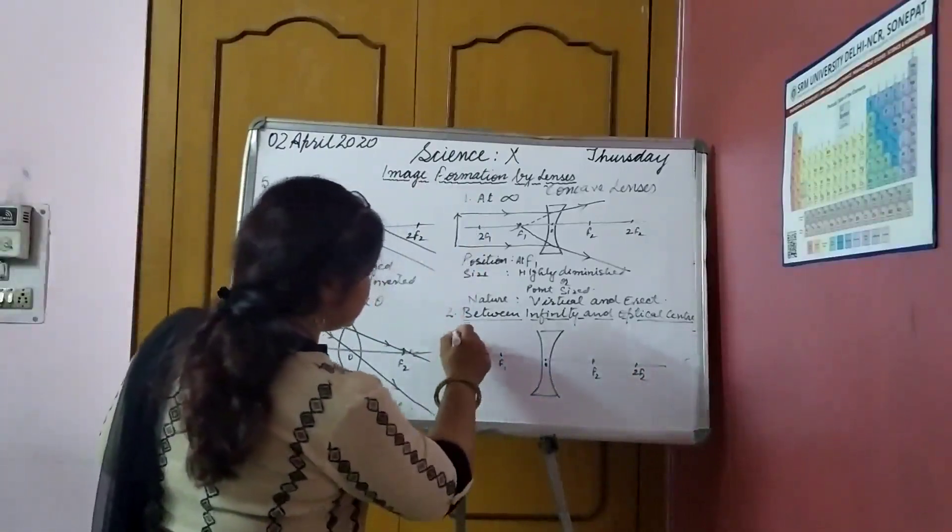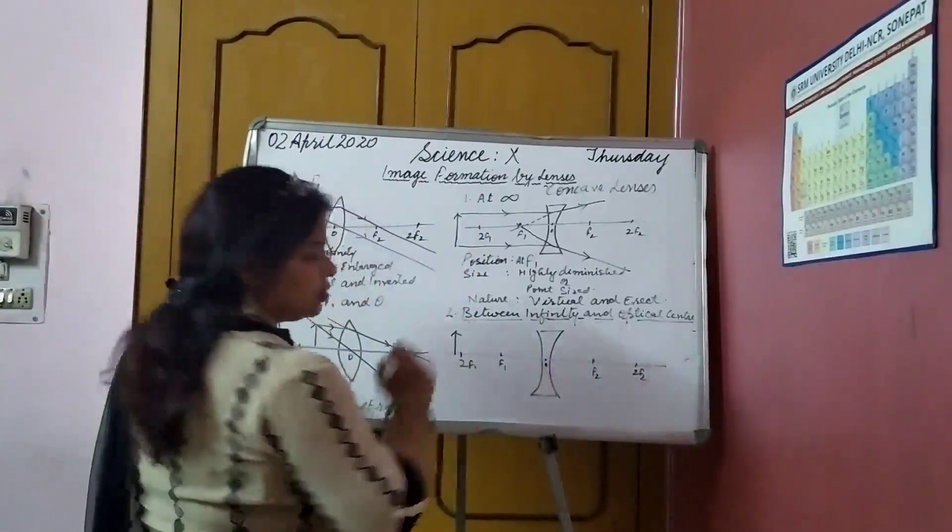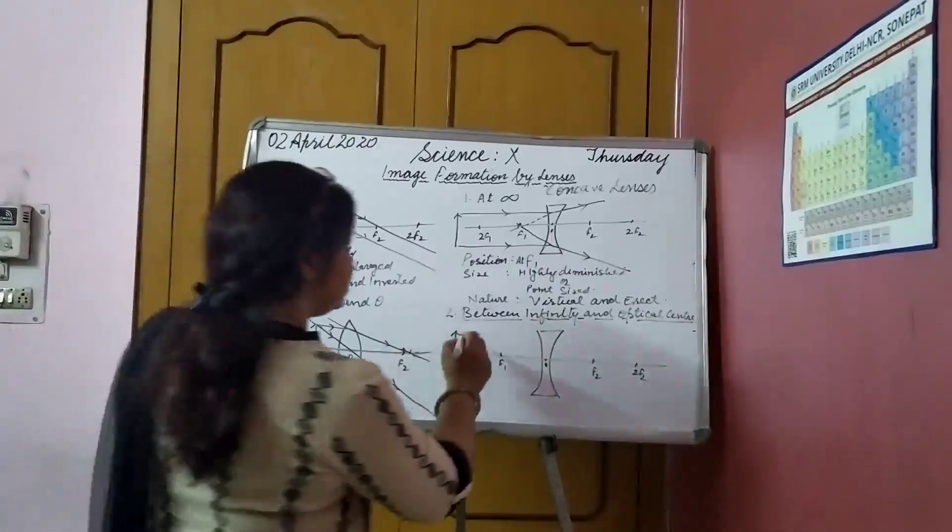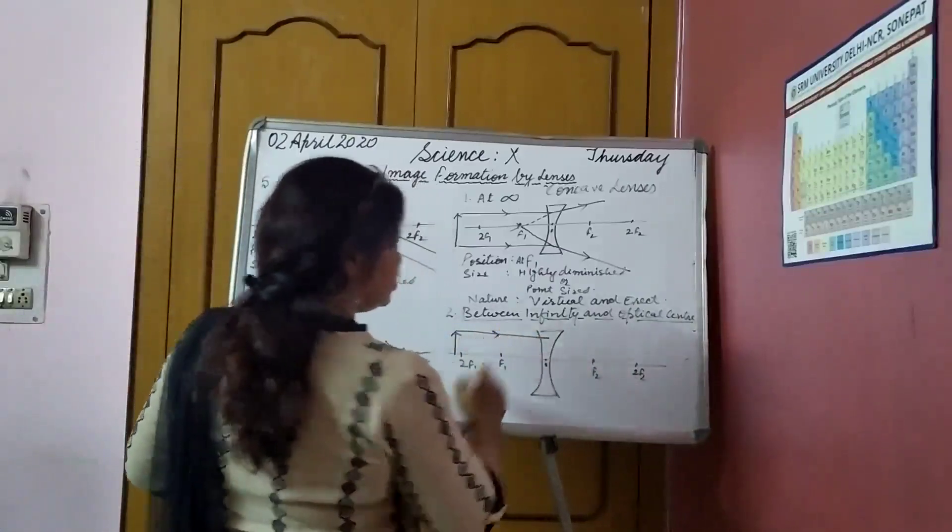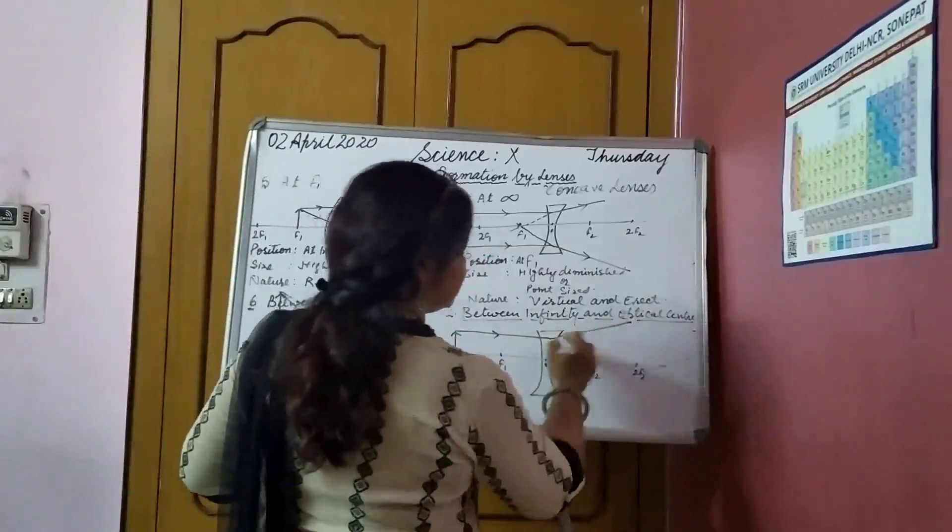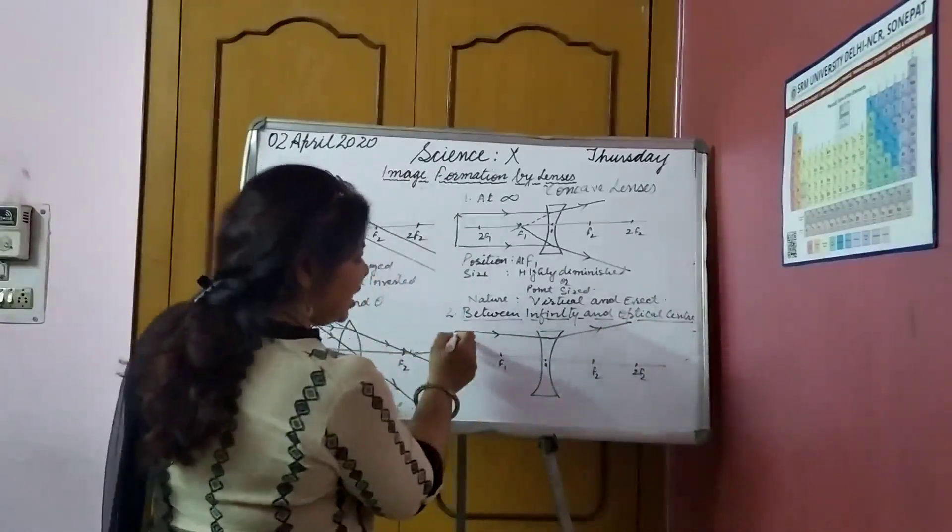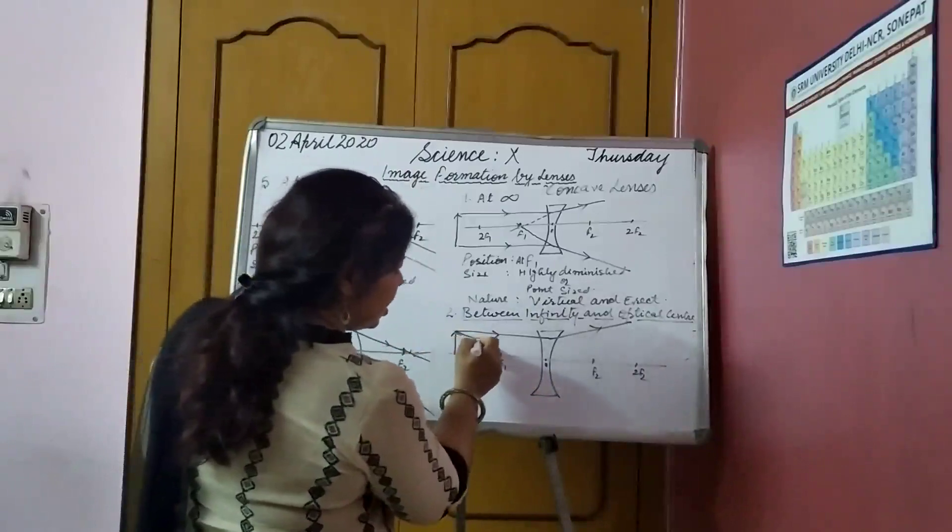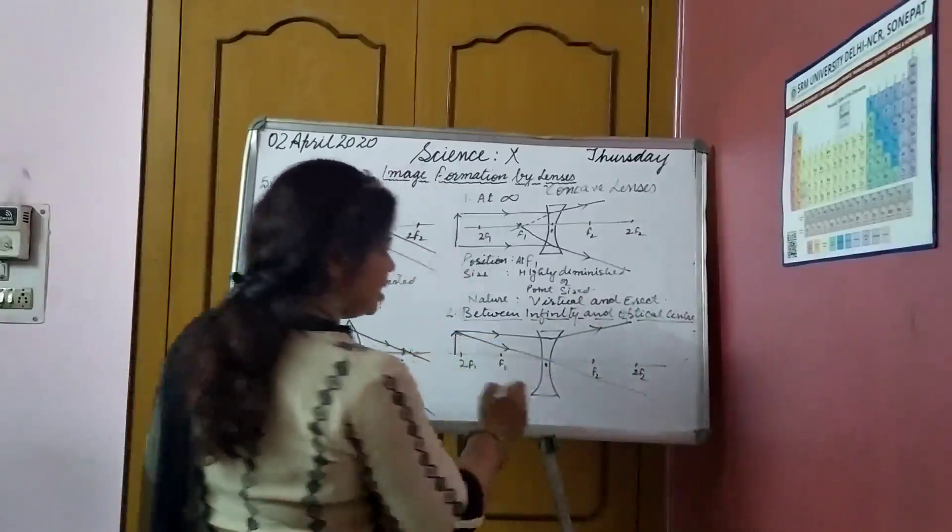We will, let us keep it here. One of the rays parallel to principal axis. So, what will happen to it? It is going to diverge. The another ray, which is passing through the optical center.